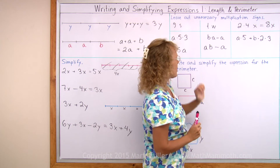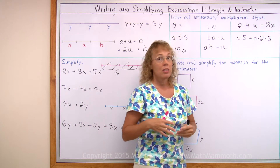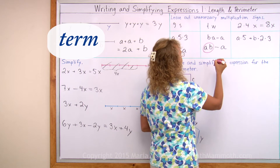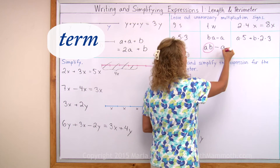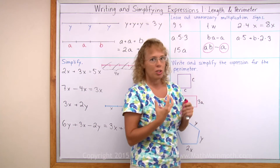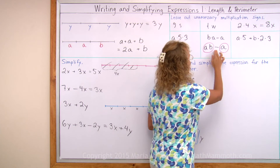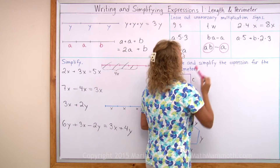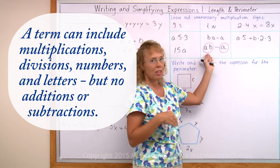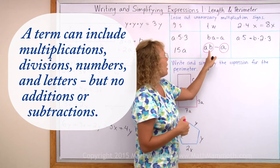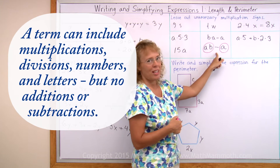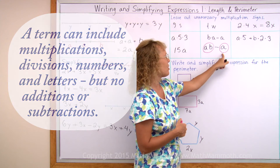I want to also mention what a term in algebra is. In the expression ab minus a, this part — ab — is one term, and this part — a — is another term. So this expression has two terms and they are separated by subtraction. A term in algebra is any kind of expression where you only have multiplications and divisions and variables and numbers, but you do not have addition or subtraction.